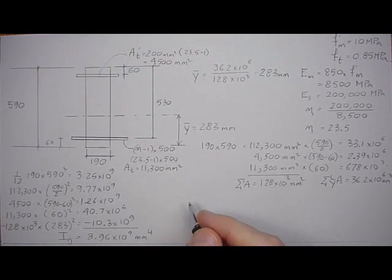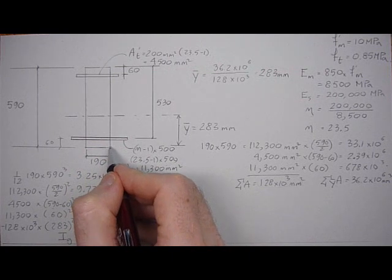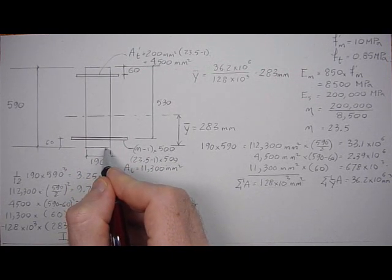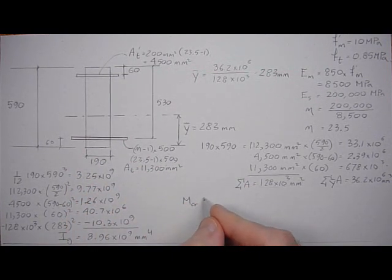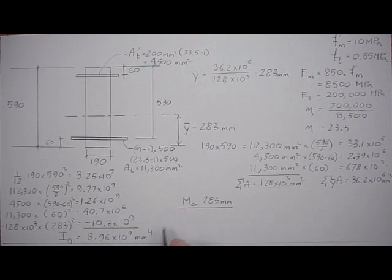So remember from MY over I theorem, the moment cracked is an unknown. Y is the distance from here to where the cracking fibers are, which is here, so that's 283 millimeters, divided by I, which is 3.96 we just calculated it.